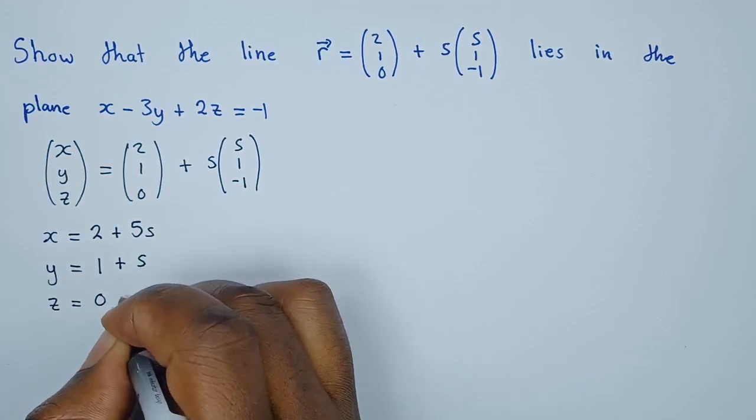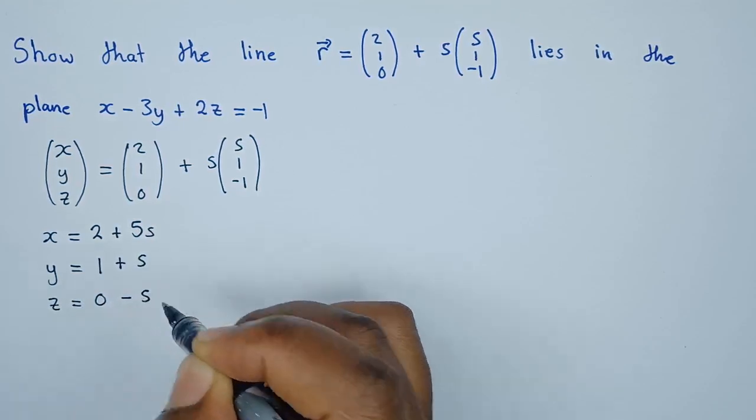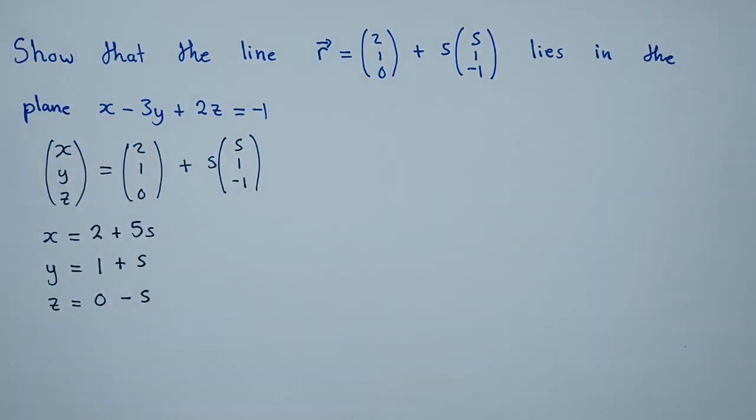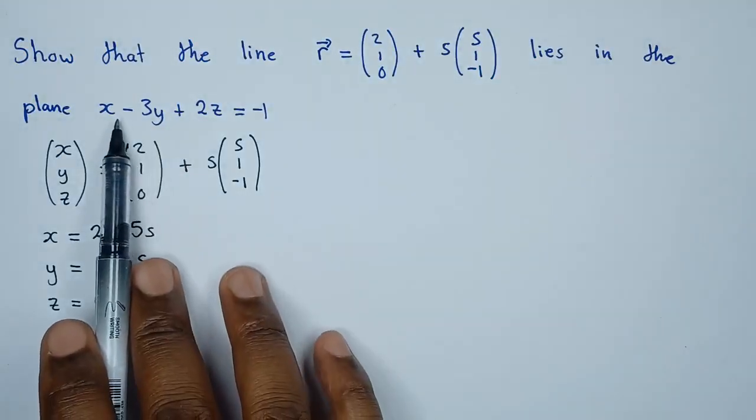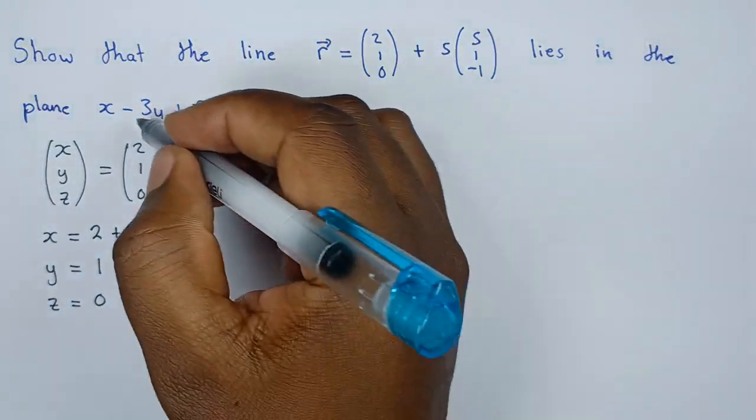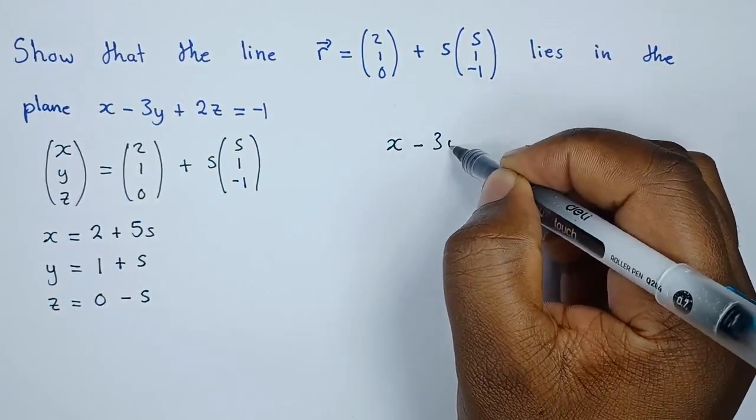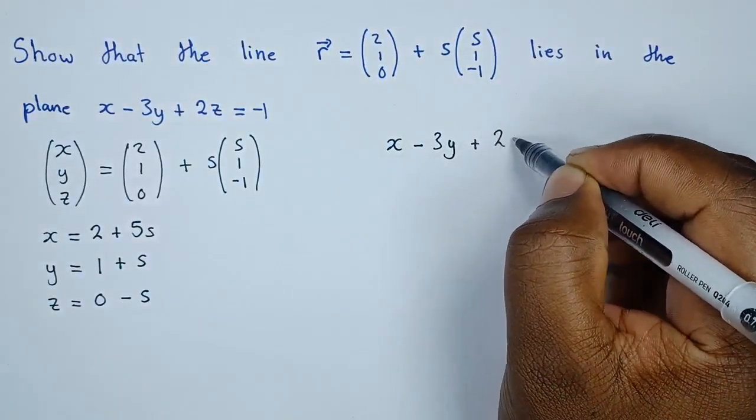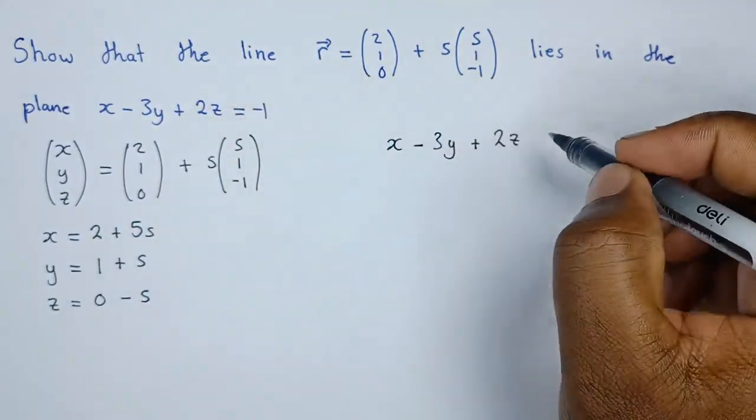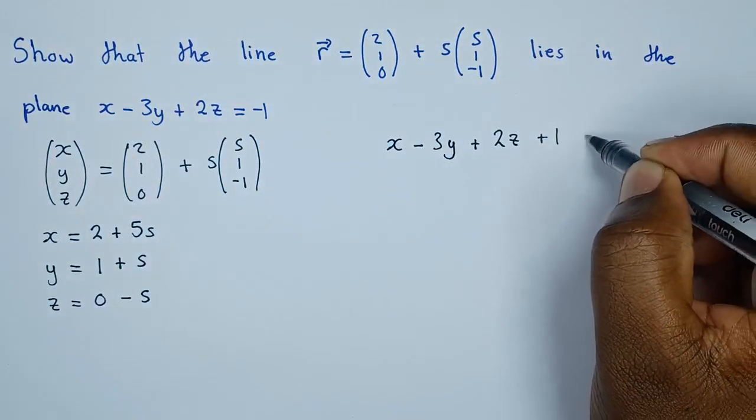Now that we have these three equations in parametric form, we're going to substitute into the plane equation. The plane equation is x minus 3y plus 2z plus 1 equals 0.